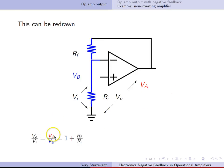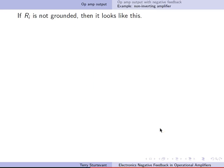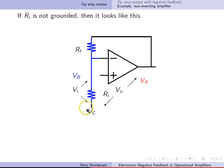So V out over V in is actually VA over VB. So now, if RI isn't grounded, and we just call this VC instead of 0, then the circuit looks like this.